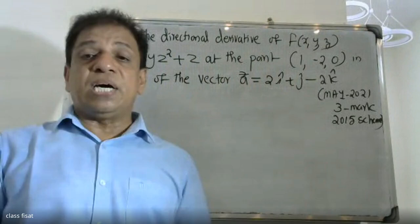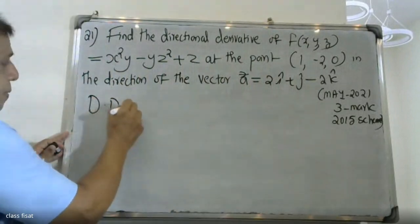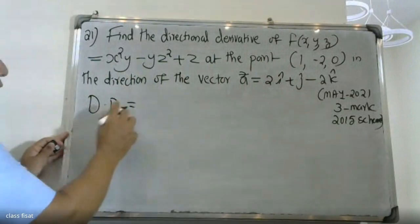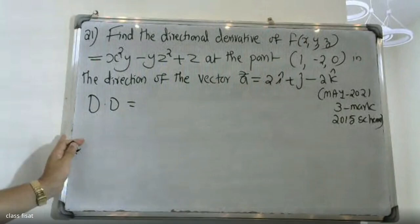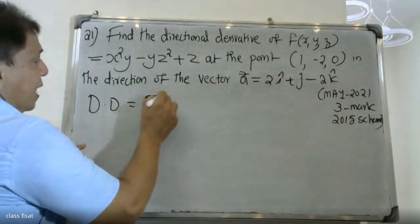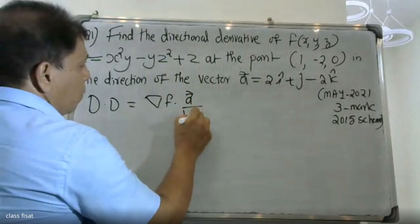The directional derivative in the direction of vector a is equal to the gradient of f in the direction of vector a divided by the modulus of a.